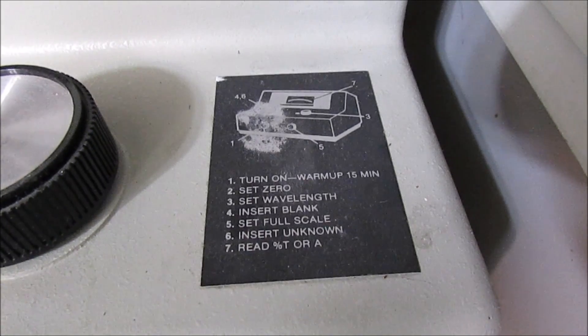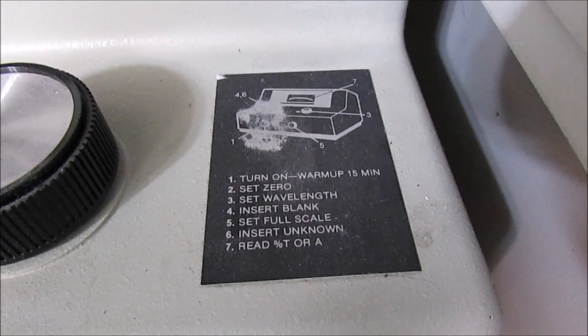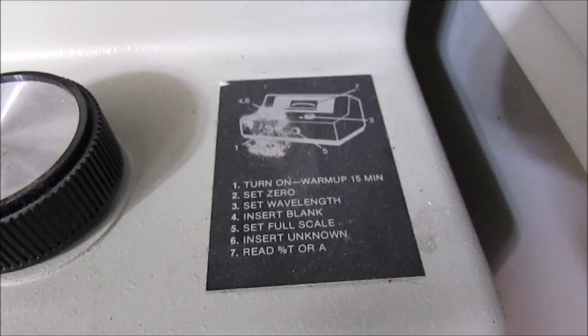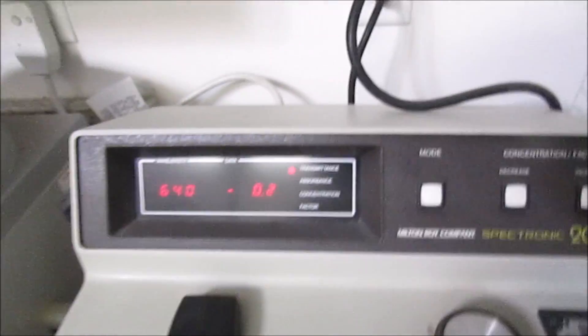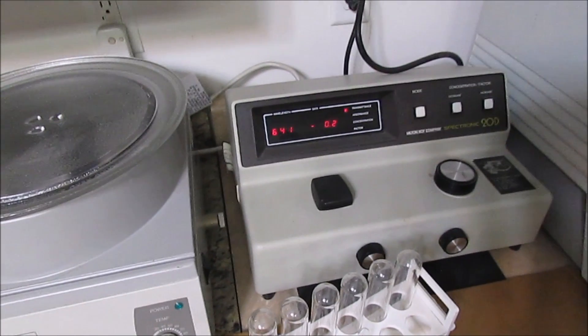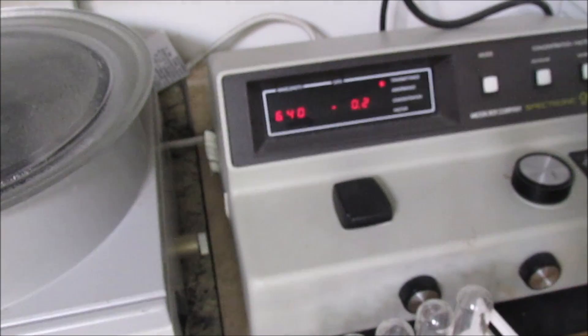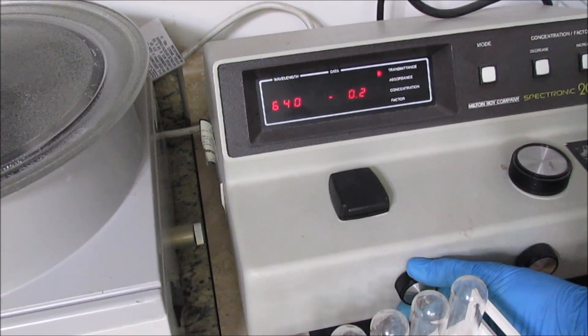Here's the instructions I'm using. I've let this thing spin on now for about 20 minutes, and I've set the wavelength for 640. Now I'm going to set the scale to zero with this knob right here.